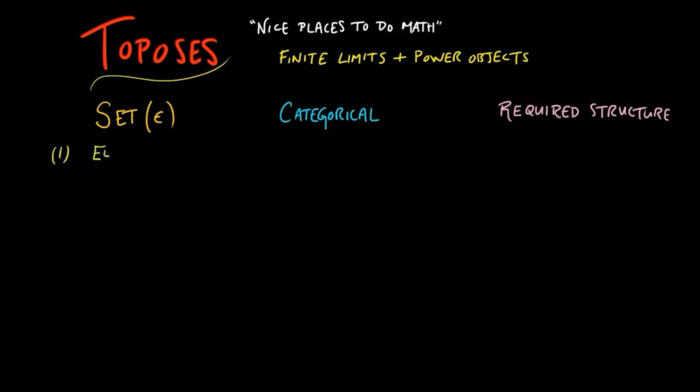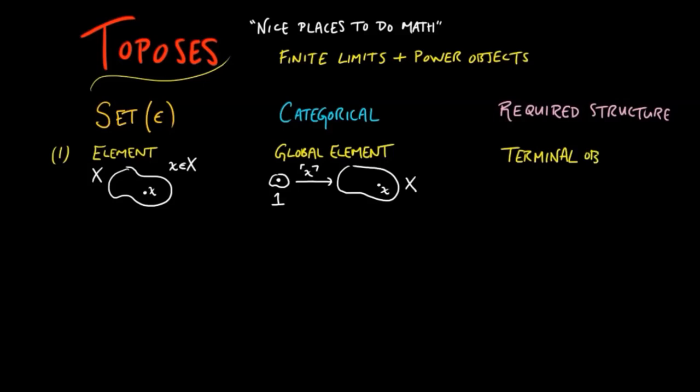First, you can't do set theory without elements. An element in a set should be thought of as an isolated dot in a bag. The categorical notion of an element little x and big X, or more precisely a global element, because as we'll see there are more general quote-unquote elements in a category, is a morphism from the terminal object to the object X, which names the element little x in it. So at the very least, we need to have a terminal object, which will classify the global elements in our category.